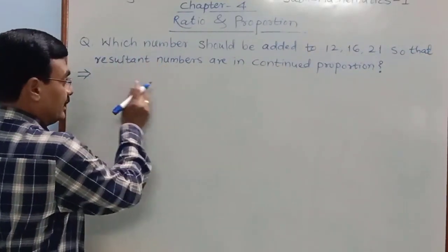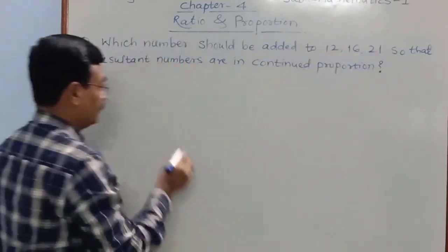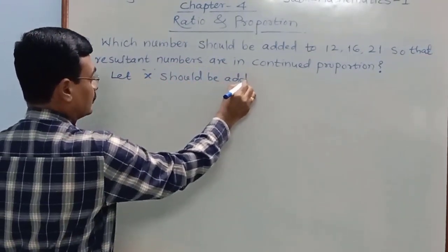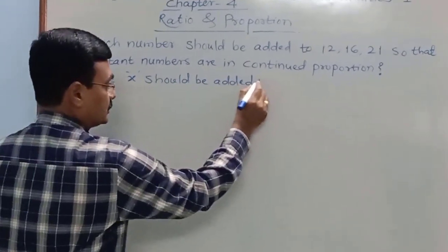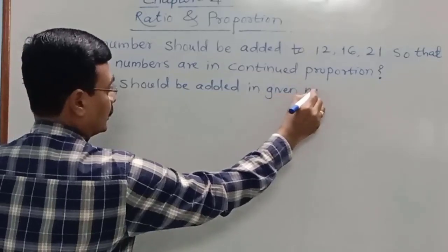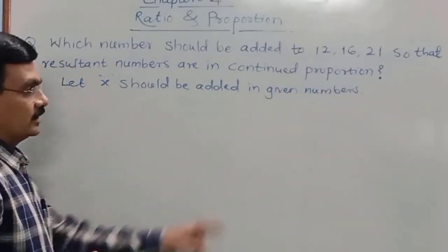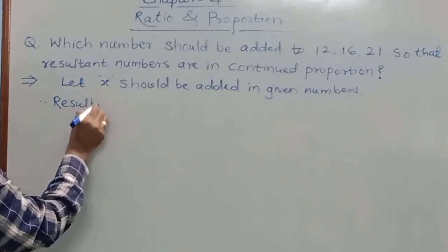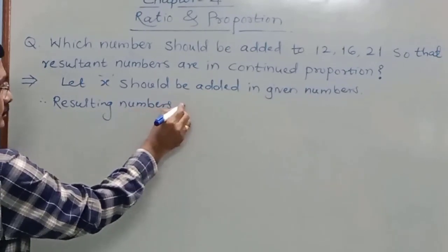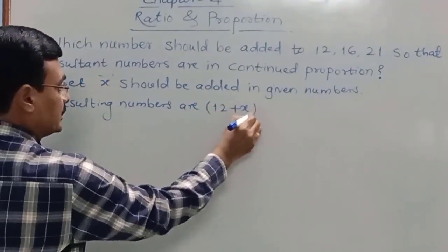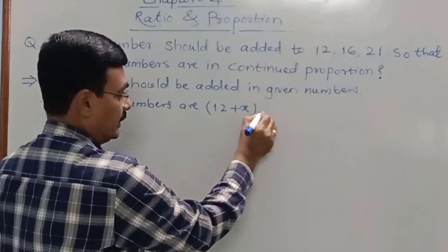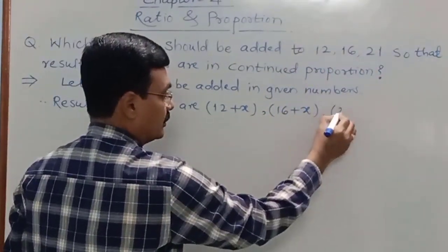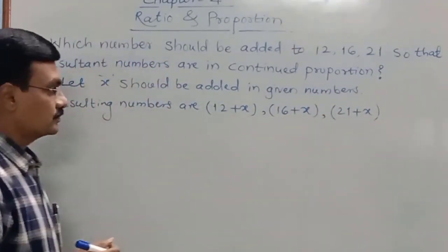For this, let us assume that x should be added to those three given numbers. If we add x to all three numbers, then the resulting numbers are: the first will be 12 plus x, the middle number becomes 16 plus x, and adding x to the last number gives 21 plus x. These are the numbers after adding x.